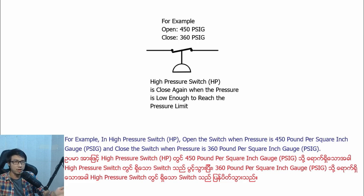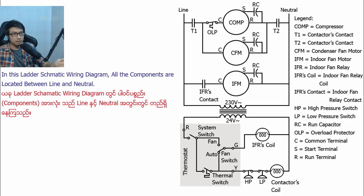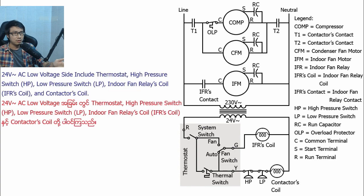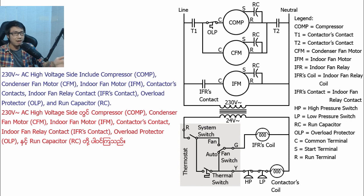In this ladder schematic wiring diagram, all components are located between line and neutral. There are two sides in this ladder schematic diagram: the 24V AC low-voltage side and the 230V AC high-voltage side. The 24V AC low-voltage side includes the thermostat, high-pressure switch, low-pressure switch, indoor fan relay coil, and contactor coil. The 230V AC high-voltage side includes the compressor, condenser fan motor, indoor fan motor, contactor contacts, overload protector, and run capacitor.